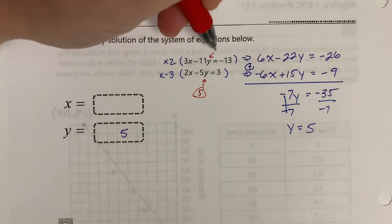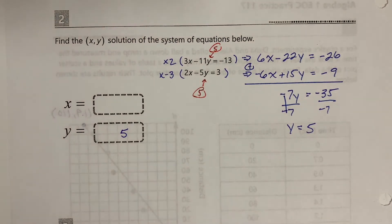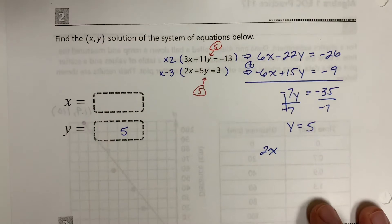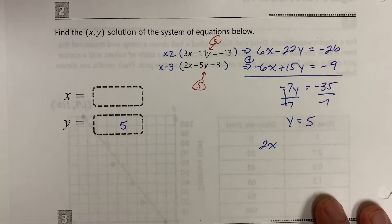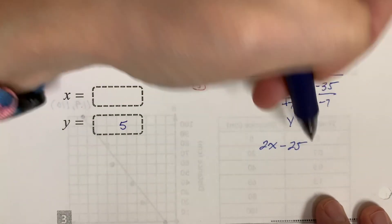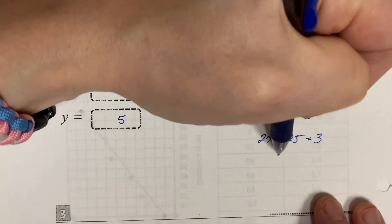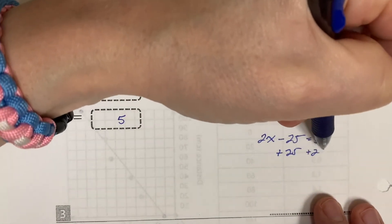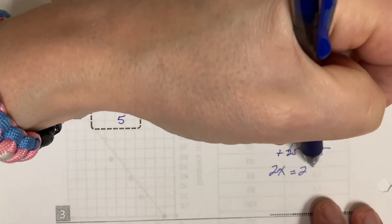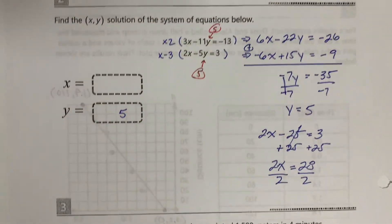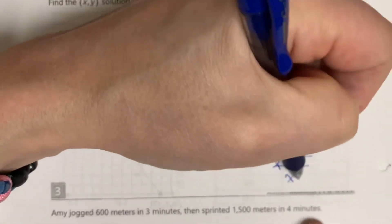Let's plug it into the bottom one. So 2x minus 5 times 5, which would be negative 25, so minus 25 equals 3. We're going to add 25 to both sides, so 2x equals 28. Divided by 2, x is going to be equal to 14.